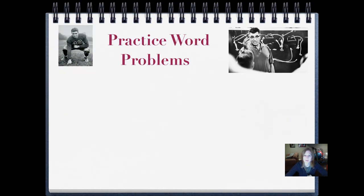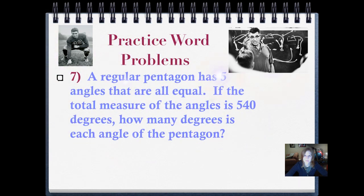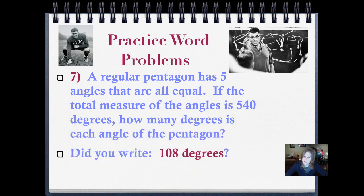Here's our practice word problem. I chose that picture of Coach Lombardi because look at all those great lines and rays and end points on his diagram that he drew for football. Some of you guys may not realize how much geometry you might use if you were coaching or playing football. A regular pentagon has five angles that are all equal. If the total measure of the angles is 540 degrees, how many degrees is each angle of the pentagon? I want you to really think about this. Decide what operation you would use. Pause it and push play when you've written it down and figured it out. Did you write 108 degrees? If it has five angles and the total measure is 540, then we would divide 540 by 5. So we would get 108 degrees.